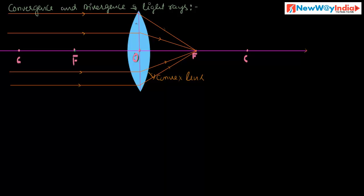So why are these rays convergent? Let us see. This convex lens is made of a large number of prisms — this is a prism, and this is a prism, and this is also a prism. So this convex lens is made of large number of prisms. So if a ray of light travels through a prism, it is deviated.